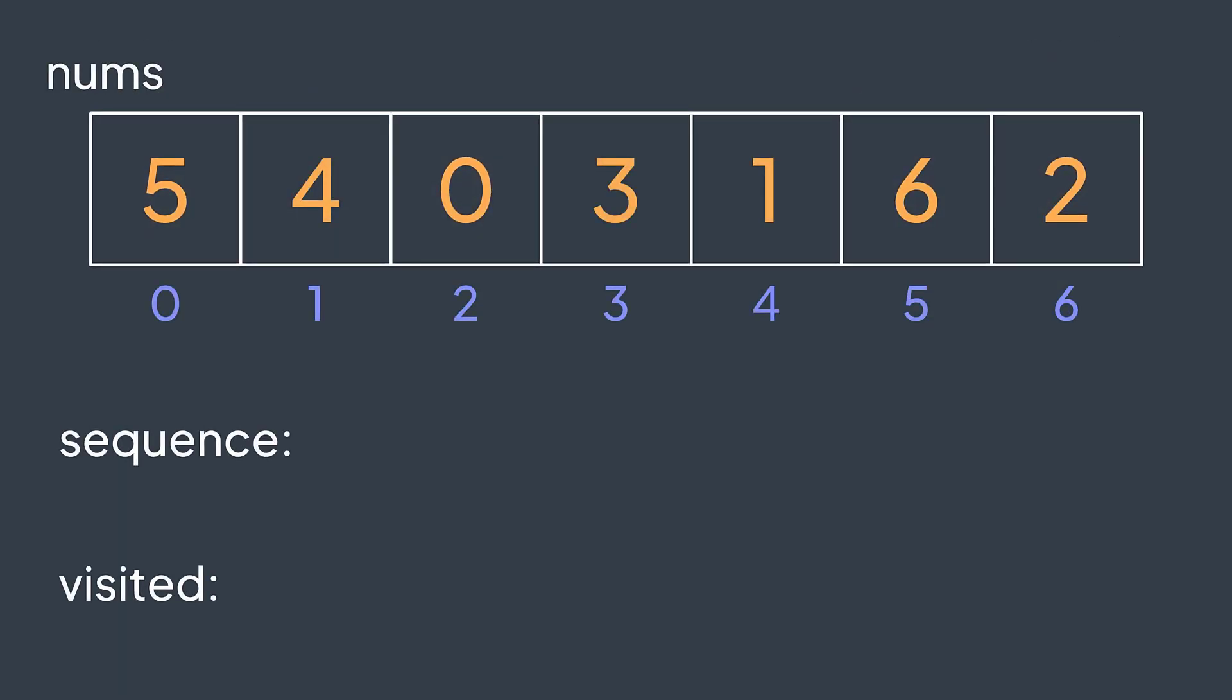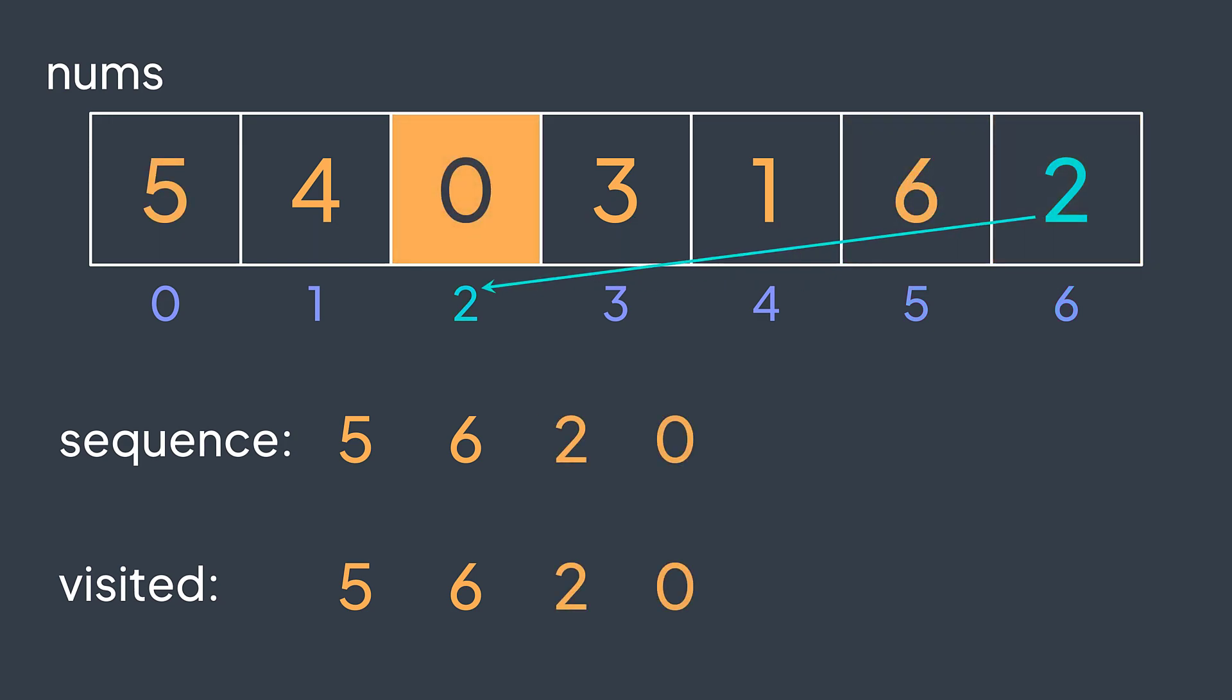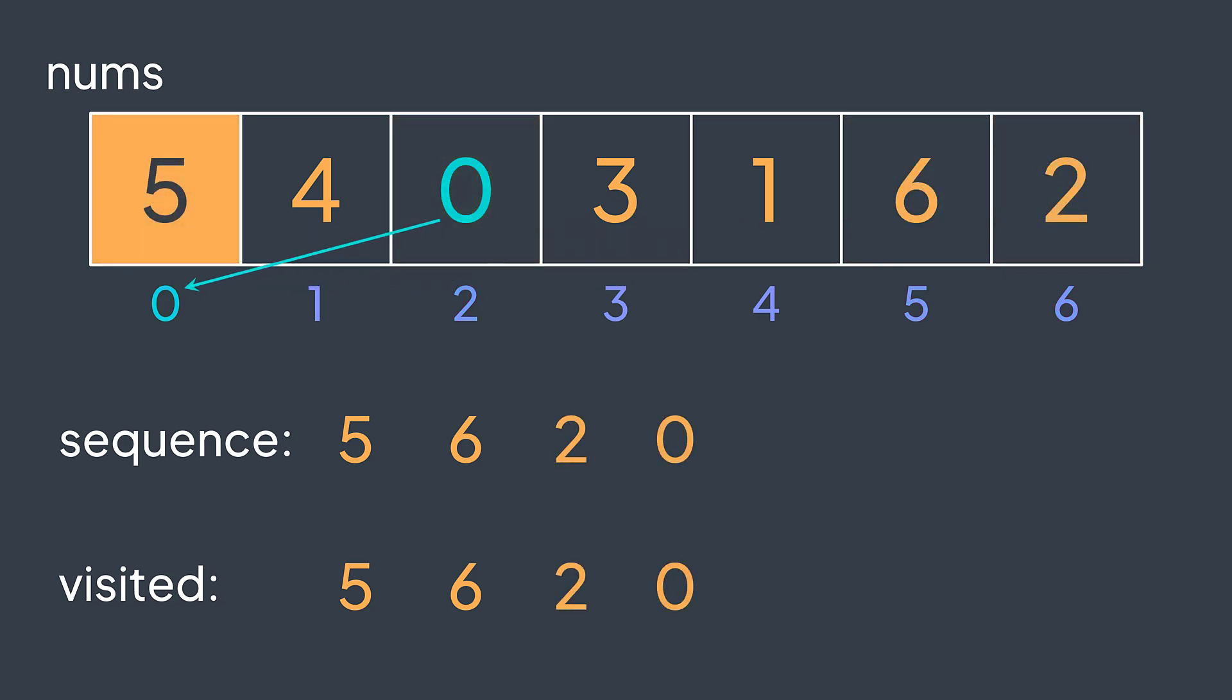With our previous example, with the first element, we have five, we put it in visited, then six, we put it in visited, then two, we put it in visited, then zero, we put it in visited, then five, end of the sequence.